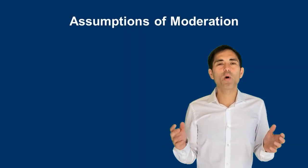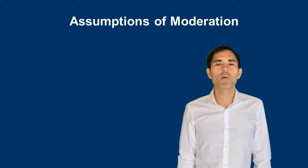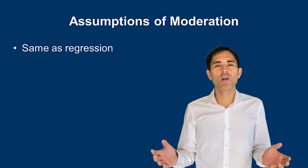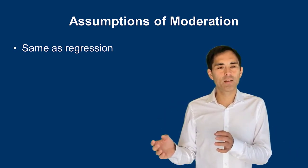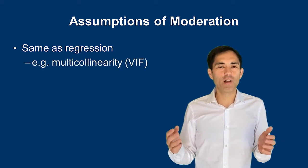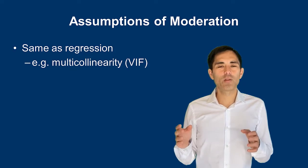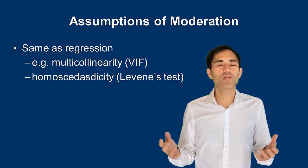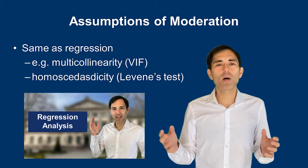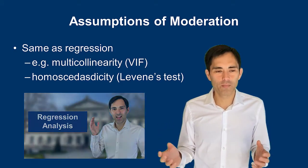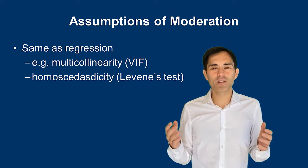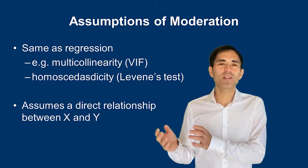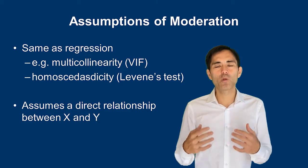There are certain assumptions important for us to trust the results of moderation analysis. The assumptions are very similar to regression, because here we talk about moderated regression analysis. Specifically, I'm thinking of multicollinearity — that means the independent and moderating variables are not strongly correlated — and second, homoscedasticity, meaning the variance of the variables is relatively equal. For moderated regression analysis, we would also expect a direct relationship between the independent and the dependent variable; in the previous example, taking aspirin would reduce pain.